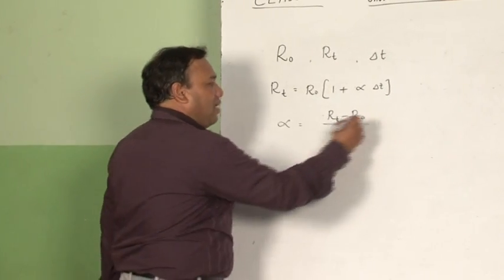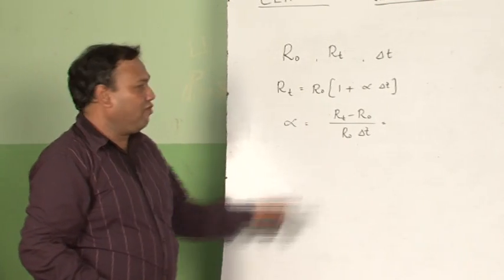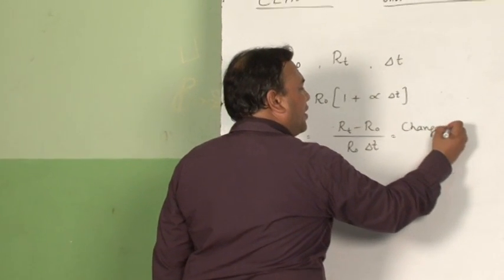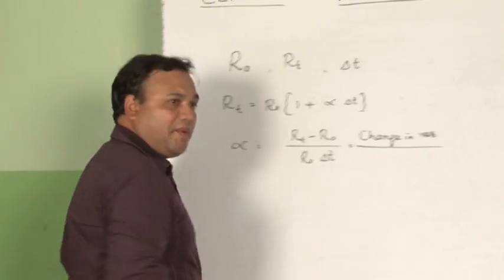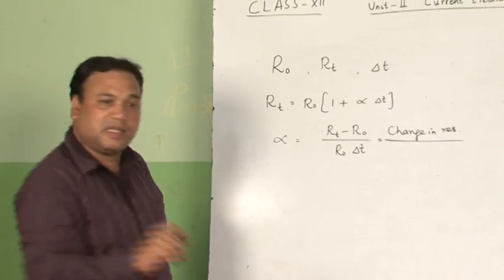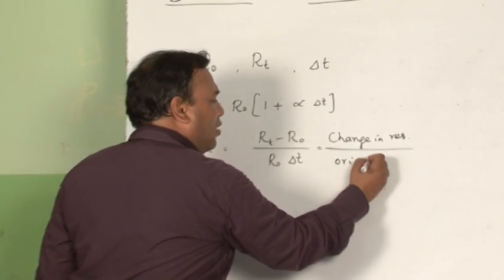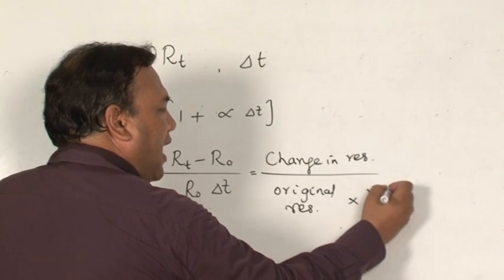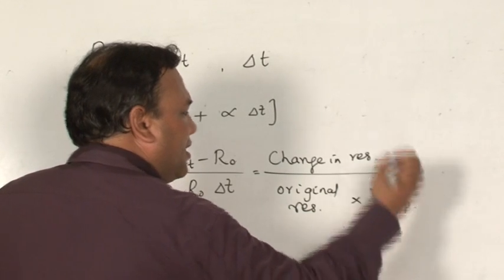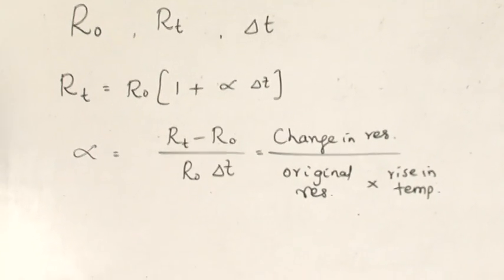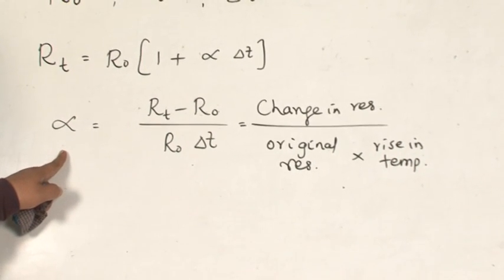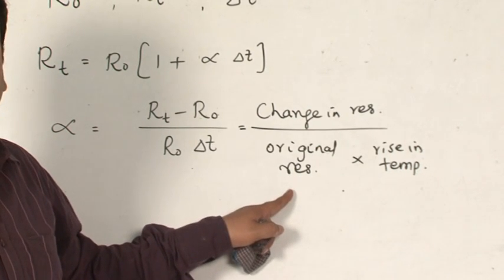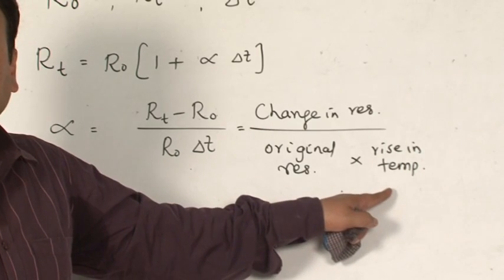Looking at the numerator — final resistance minus initial resistance — it is the change in resistance. The denominator is R naught, the original resistance, multiplied by delta T, the rise in temperature. So the temperature coefficient of resistance is defined as the change in resistance per unit original resistance per degree rise in temperature.